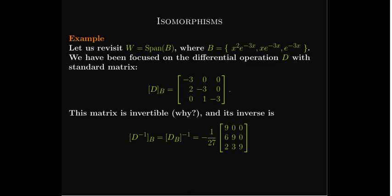Let's look at an example we've used in many videos, where we have the basis B: x squared e to the negative 3x, x e to the negative 3x, and e to the negative 3x. We know that differentiation on the span of this subspace is an operator, and we've found its standard matrix in previous examples. That matrix is invertible — it's a lower triangular matrix with no zero diagonal entries.